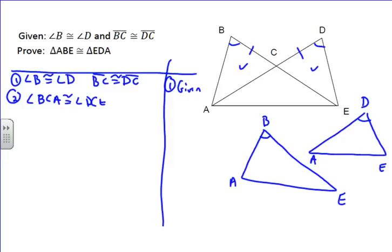And you get angle BCA is congruent to angle DCE. And that's just because vertical angles are congruent.